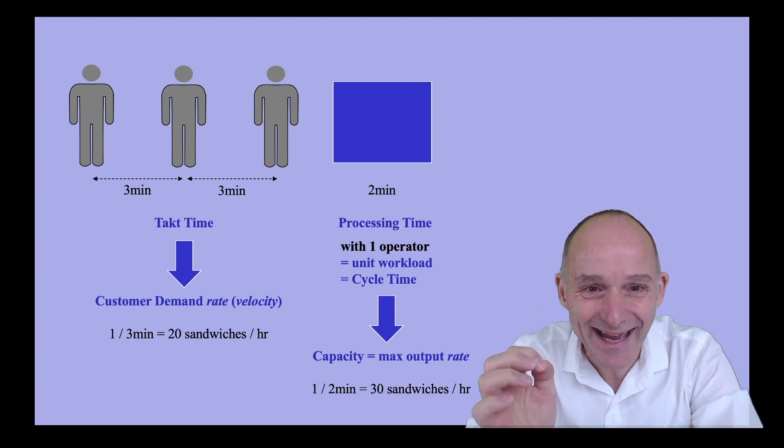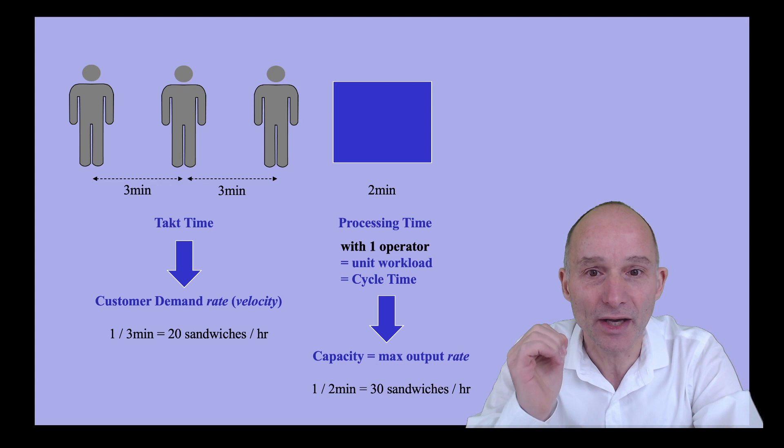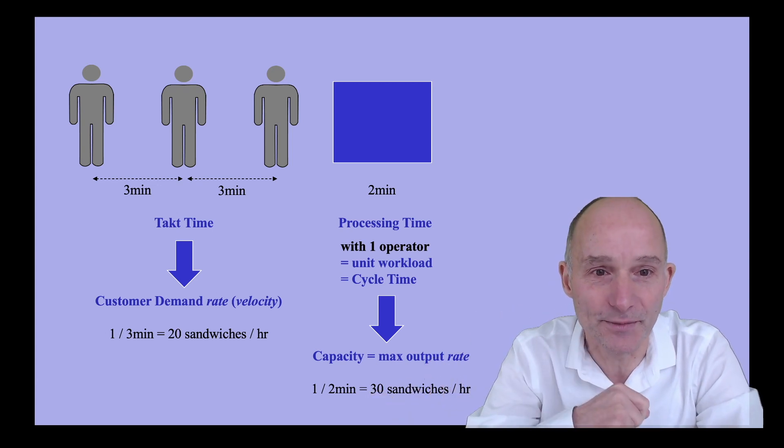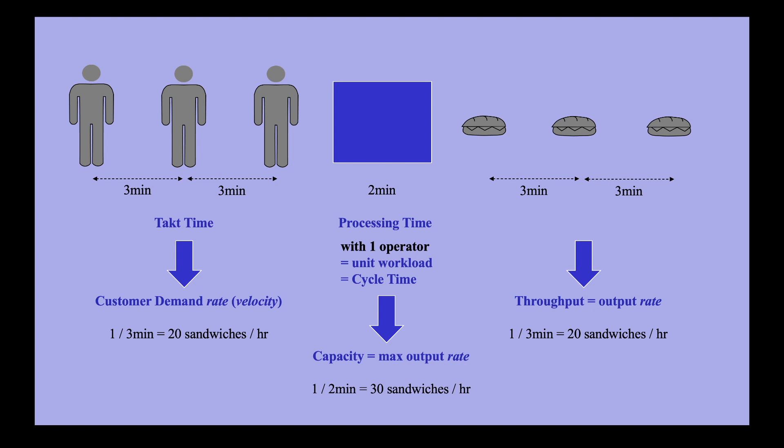In contrast, takt time and unit workload have only one meaning everywhere. So use those terms. Given that the cycle time is below the takt time, the sandwich shop has sufficient capacity to keep up with demand. In fact, the operator will idle 1 minute during every 3-minute takt time.